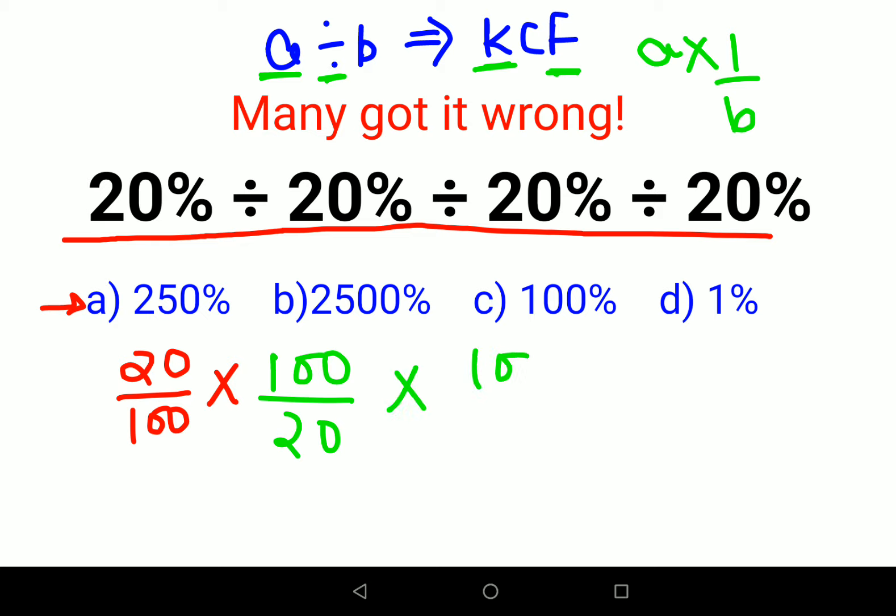Similarly, we will have 100 upon 20 and 100 upon 20. So this and this is canceling, and here all these zeros are canceling. So I'm just left with 5 and 5.